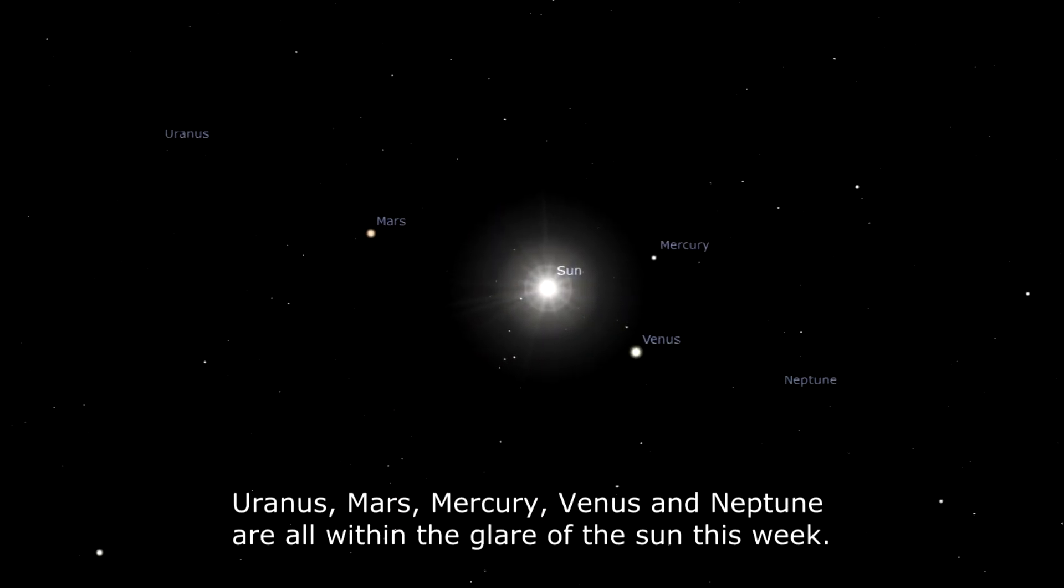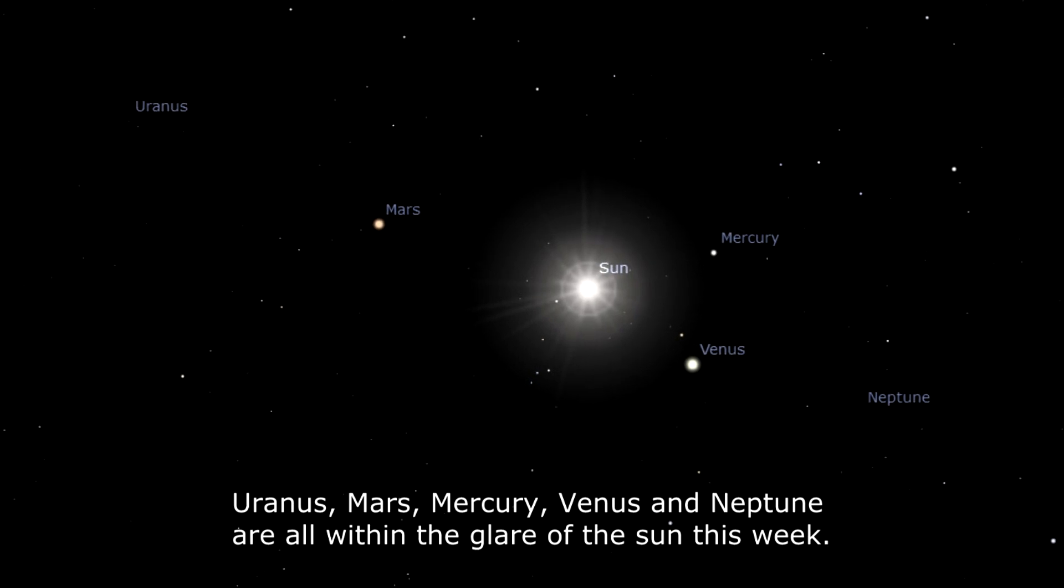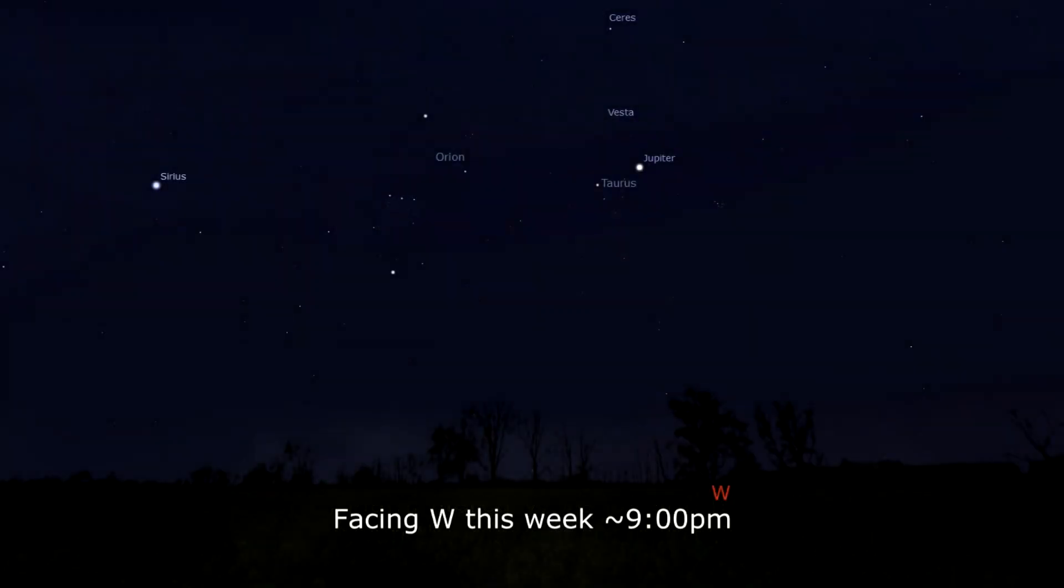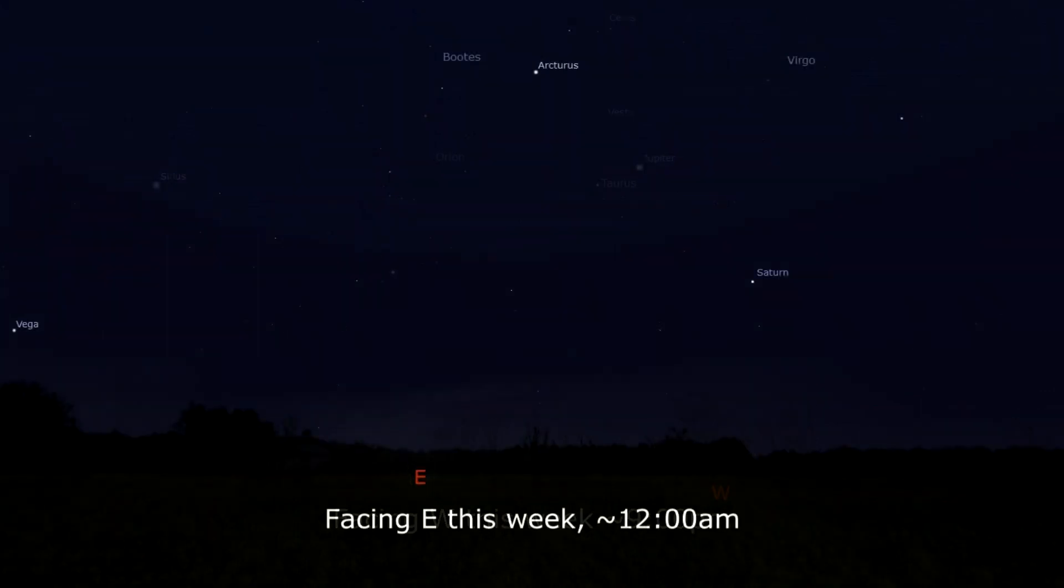Five planets are within 20 degrees of the sun this week, which leaves us only with Jupiter still near the Hyades and Taurus, with a nice double moon transit occurring on the 9th. And Saturn rising ever higher in the evening sky, hitting the sweet spot of 20 degrees altitude by midnight this weekend.